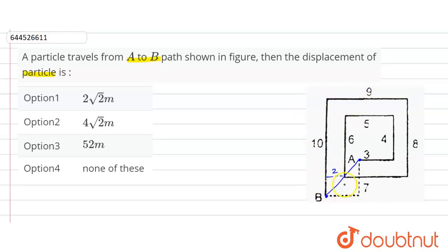So this will be 2. This angle is 90, so this will be 2√2. Now see this distance.